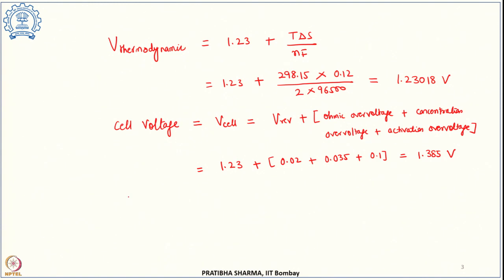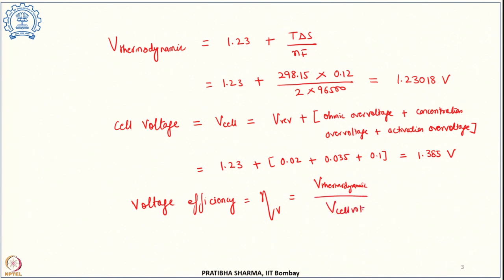The voltage efficiency η_V is the ratio of thermodynamic voltage to cell voltage. We have calculated it as 1.23018 over 1.385, which comes out to be 88.82%. That is the answer to the first problem.